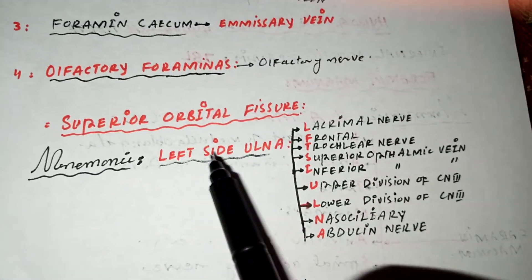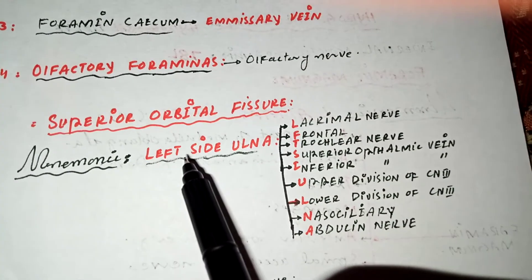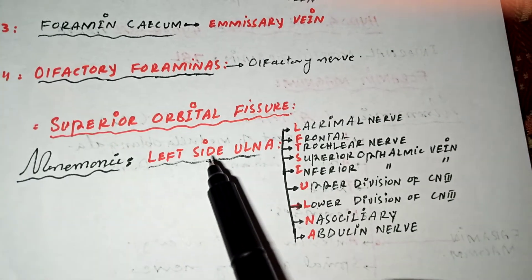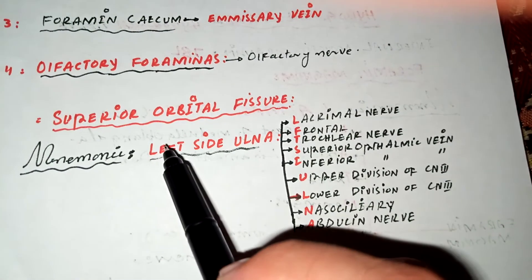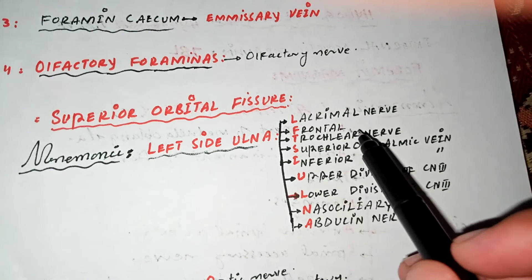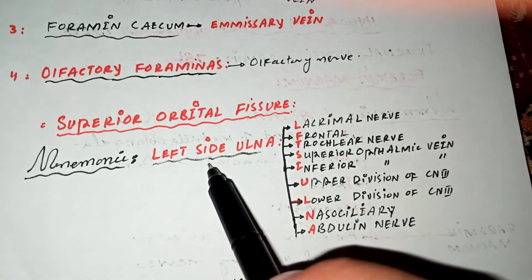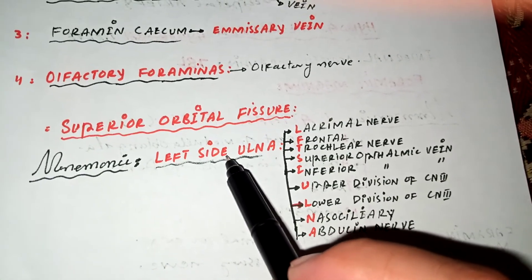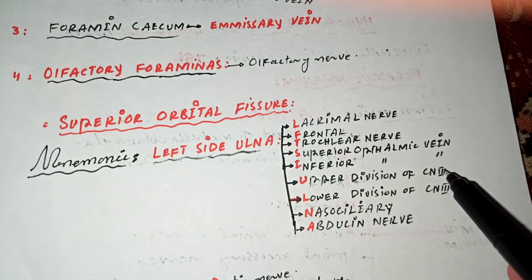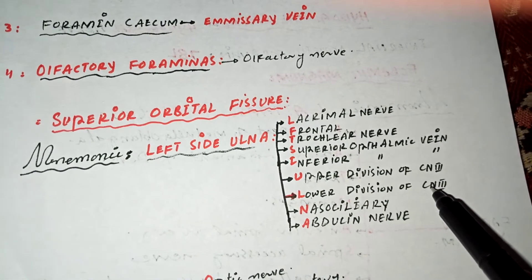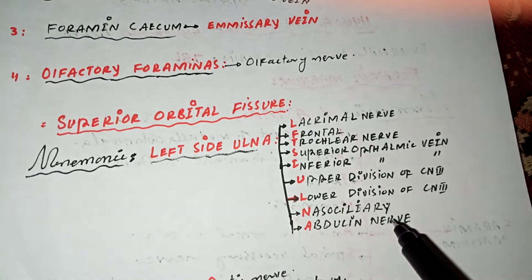Another foramina in the middle cranial fossa is the superior orbital fissure. The mnemonic for its structures is 'left side ULNA': L for the lacrimal nerve, F for the frontal nerve, T for the trochlear nerve, S for the superior ophthalmic vein, I for the inferior ophthalmic vein; then U for the upper division of the oculomotor nerve, L for the lower division of the oculomotor nerve, N for the nasociliary nerve, and A for the abducens nerve.